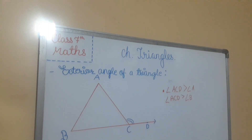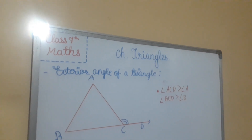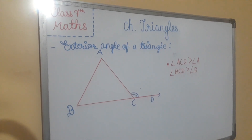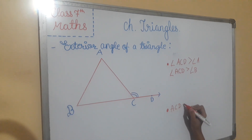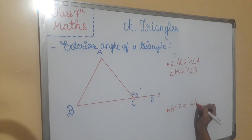The exterior angle of a triangle is equal to the sum of the two interior opposite angles. Like angle ACD is equal to angle A plus angle B.